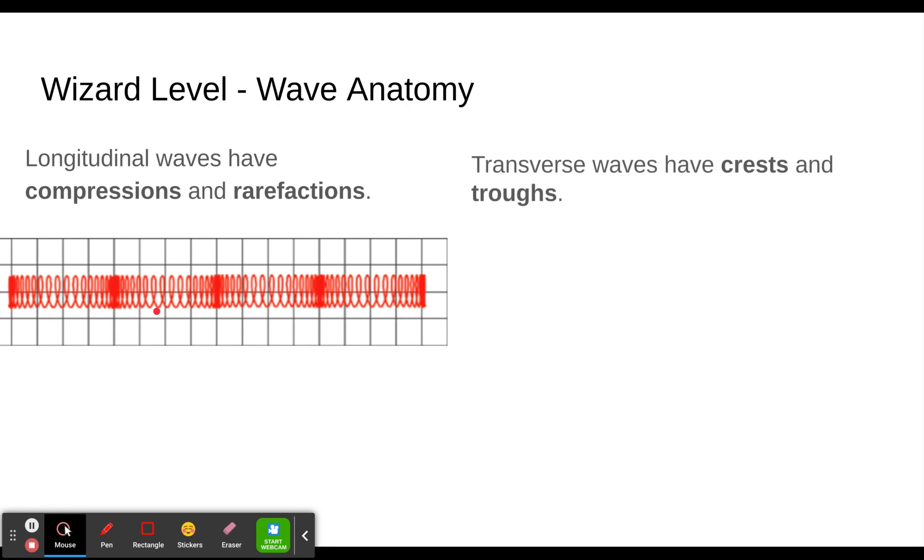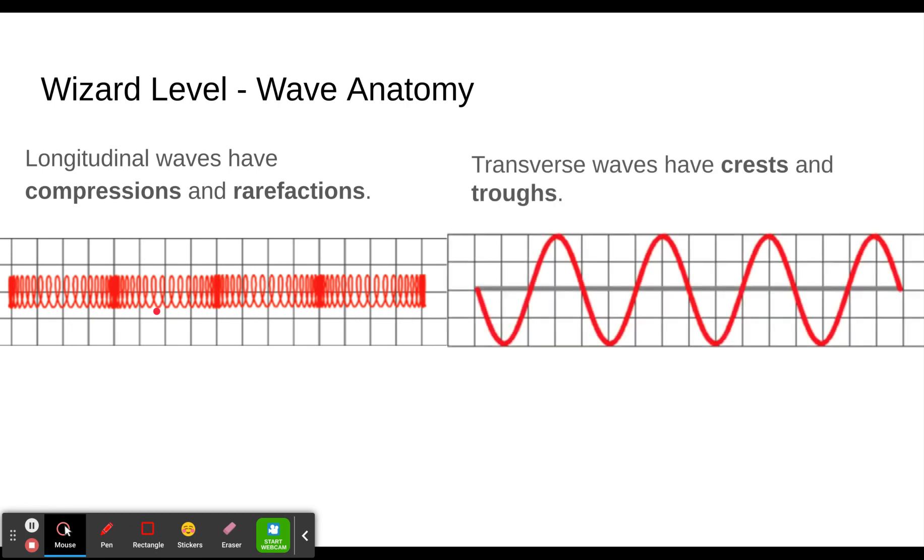Transverse waves have crests and troughs. We see the crests up here at the top, the troughs down here at the bottom. This is essentially assuming it's vertical, moving vertically. If this was moving side to side, it would be really hard to tell the crest from the trough. But in physics classes in high school, you always see the one at the top called the crest and the one at the bottom called the trough.